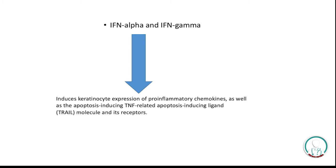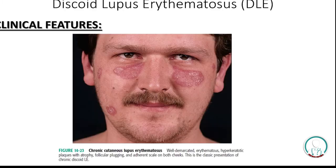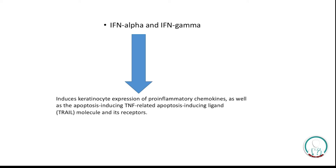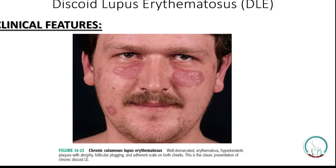Interferon alpha is produced by plasmacytoid dendritic cells and interferon gamma is produced by keratinocytes, inducing keratinocyte expression of pro-inflammatory chemokines as well as the TNF-related apoptosis-inducing ligand (TRAIL) molecule and its receptors. In discoid lupus erythematosus, the sun may act as a trigger; there is evidence that responses of toll-like receptors, heat shock proteins, and danger-associated molecular patterns are also involved.